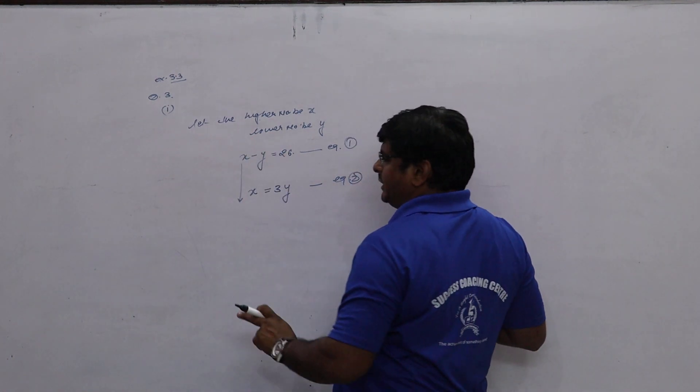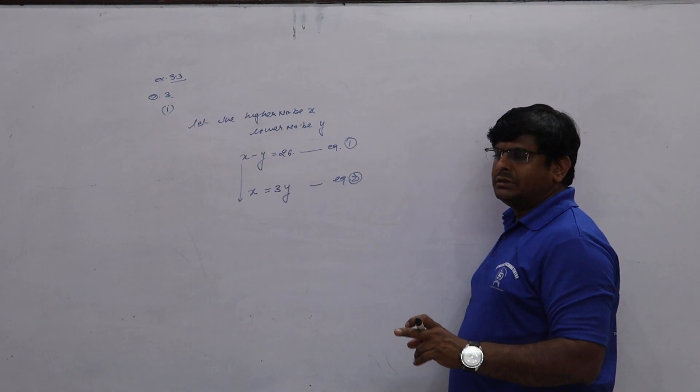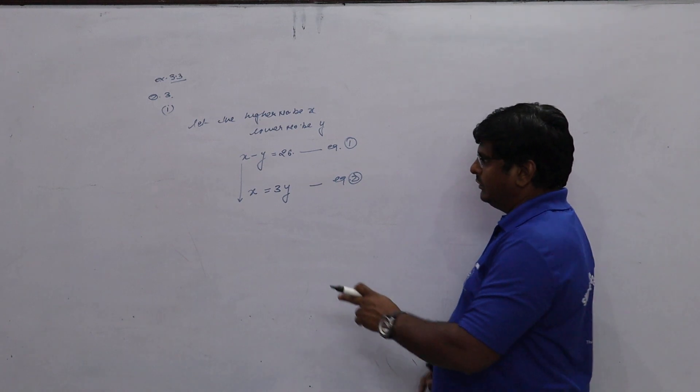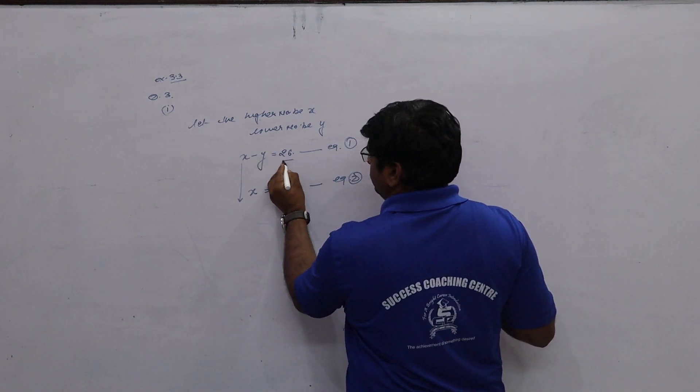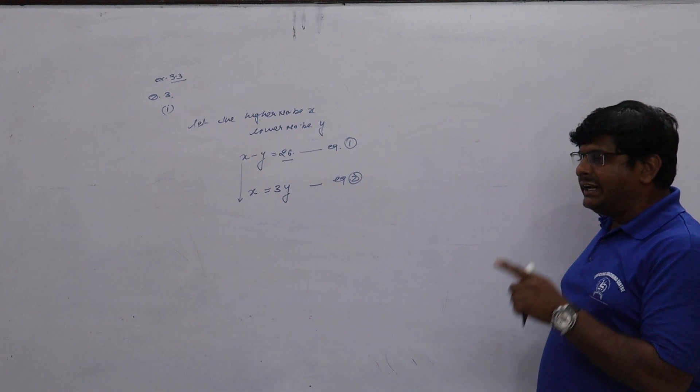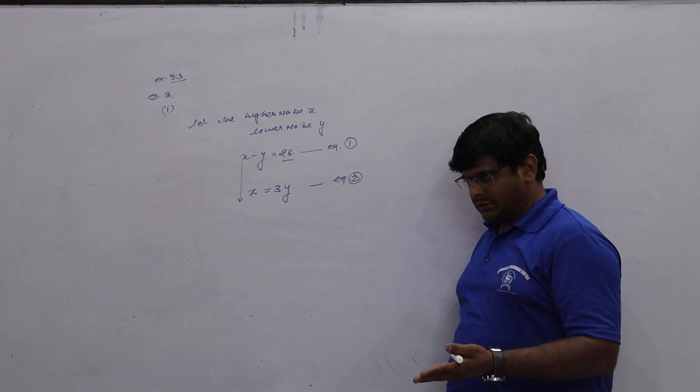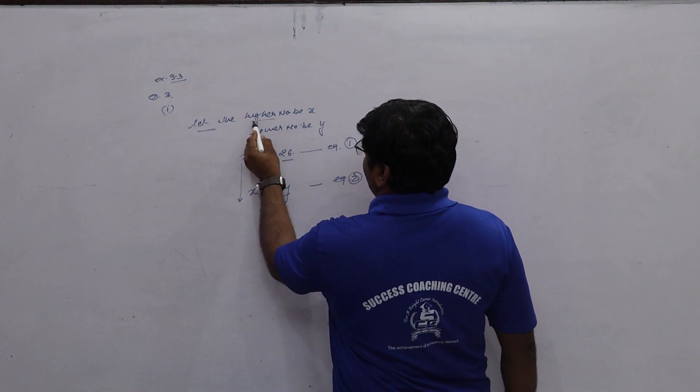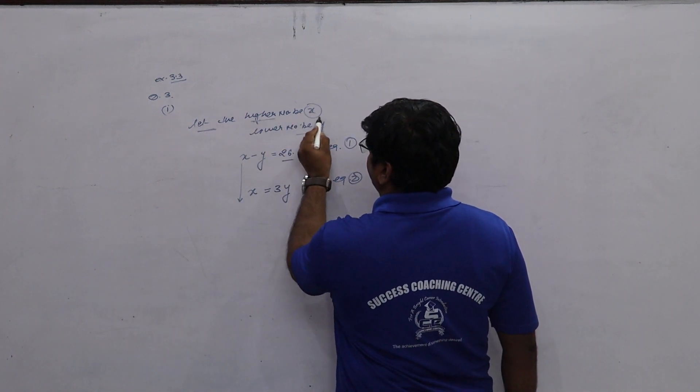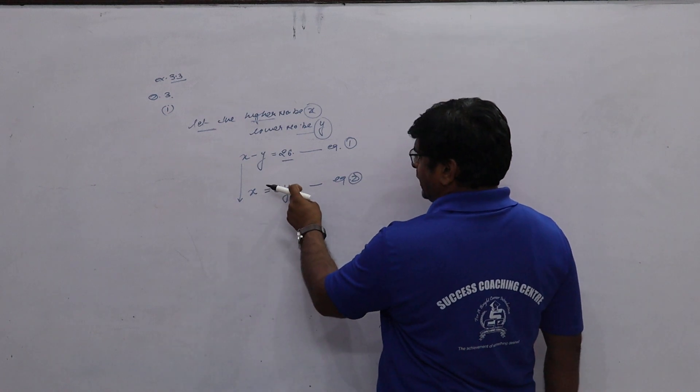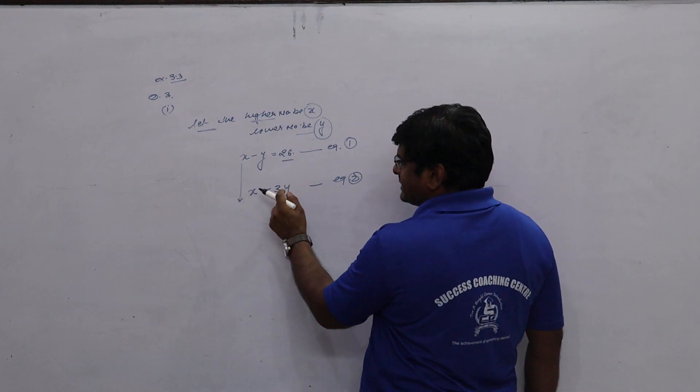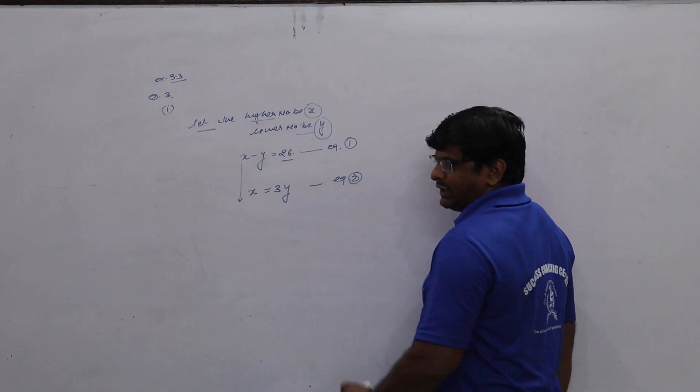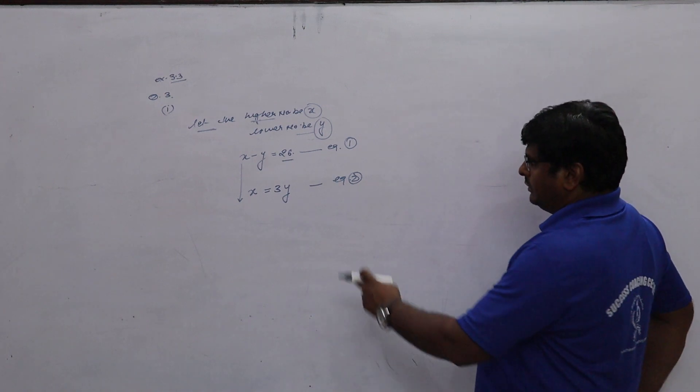The difference between two numbers, it means x and y. x minus y is equal to 26, and one number is 3 times the other. Higher number be x and lower number be y. Lower number is higher and higher number is 3 times lower number. Clear? Yes.